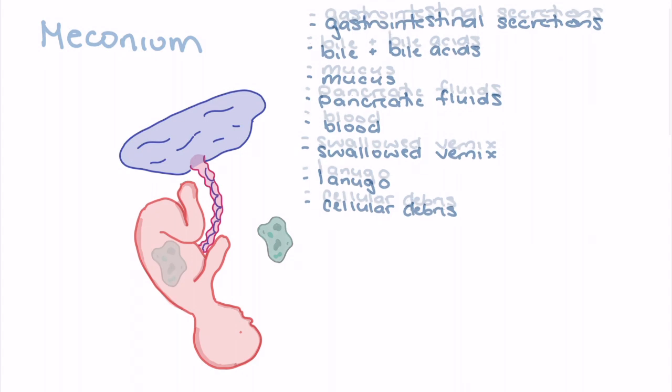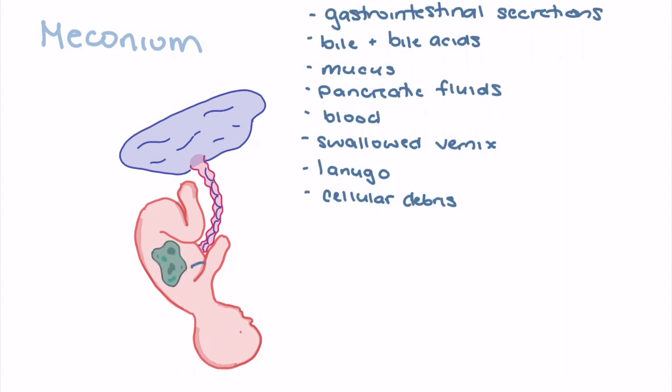Meconium is not typically found in the amniotic fluid or on the fetus during birth. Instead, it's usually passed within the first 24 to 72 hours after birth.